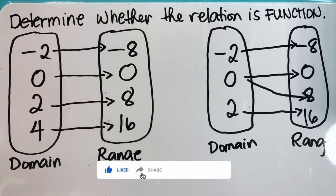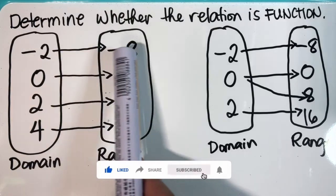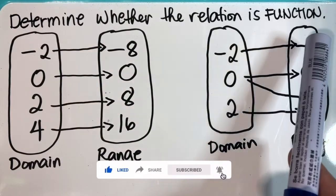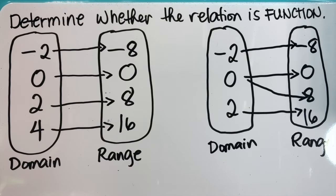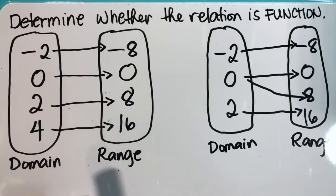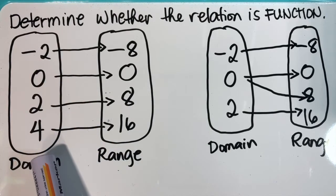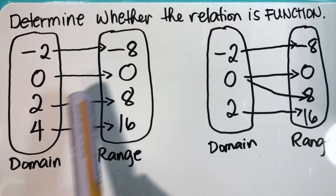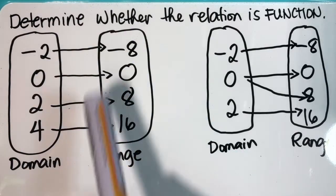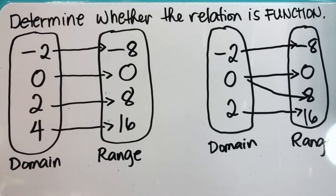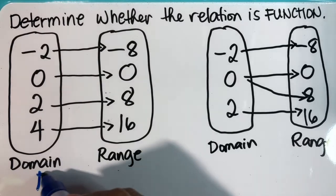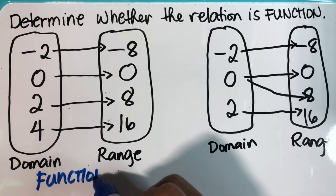This video shows how to determine whether a relation is a function. How would you know if the given relation is a function? Look at the domain — when each element of the domain is paired with exactly one element of the range, therefore it is a function.